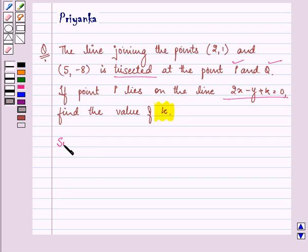So let's proceed with the solution. First, understand this question. We are given that a line joining two points, let it be A and B, having coordinates (2,1) and (5,-8) is trisected at the points P and Q. So let this be point P and let this be point Q.